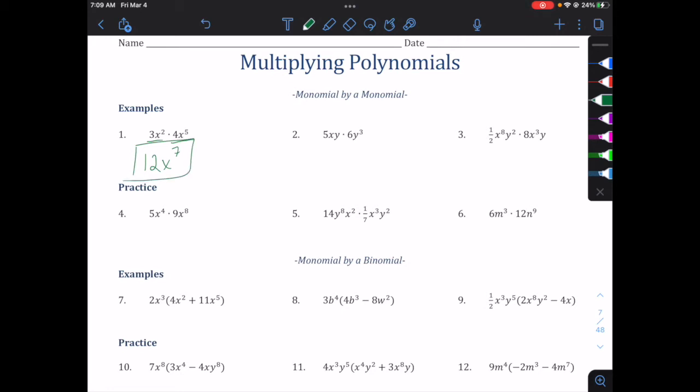Let's try another one. This one we have 5xy times 6y cubed, so we have an x and a y here. But we start again by multiplying the coefficients. Coefficient 5, coefficient 6, multiply them, we get 30.